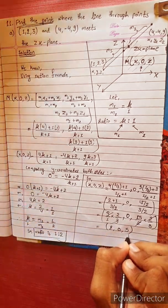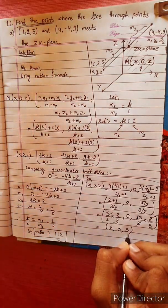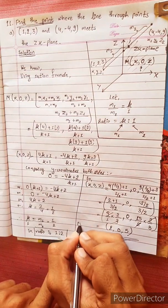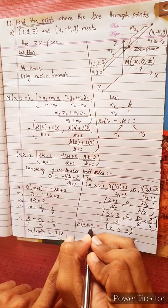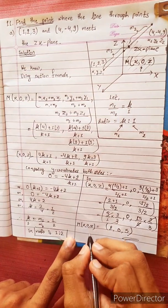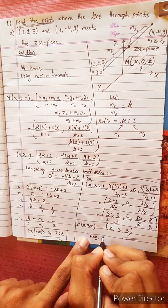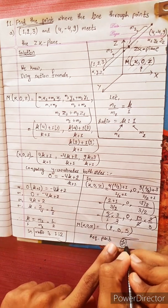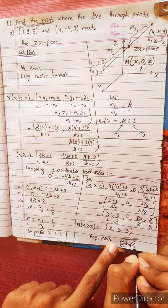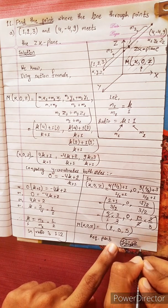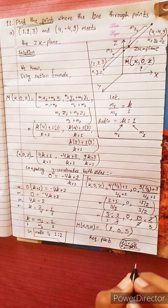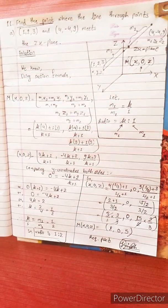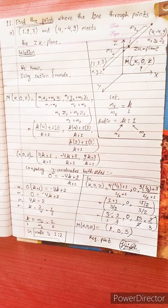The answer is (5, 0, 5) — this is the required point. Bye bye, thank you.